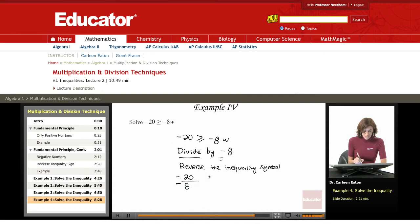So once I do that, I need to change this greater than or equal to into less than or equal to. On the other side, I've got negative 8w and I'm dividing that by a negative 8. So what I come up with on this side is 20 over 8 is less than or equal to w.